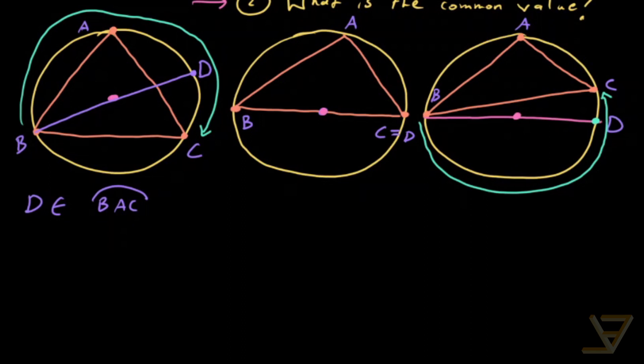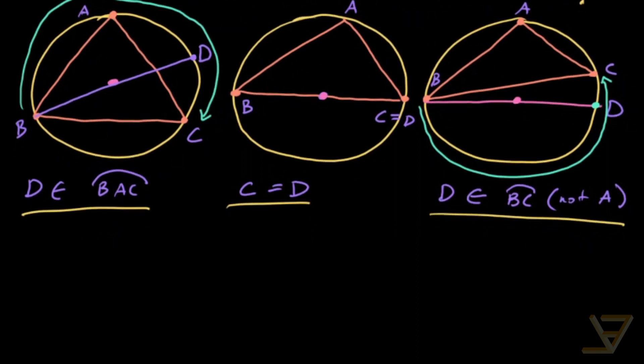So let me write down the cases here. In the first case, D is in BAC. In the second case, C equals D. And in the third case, we have D is an element of the arc BC that does not contain A. So those are our three cases. And we're going to be using the inscribed angle theorem and Thales theorem to handle each of them.